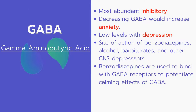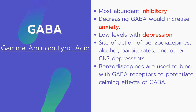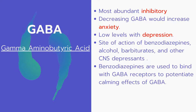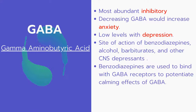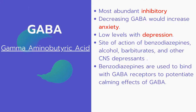The fifth neurotransmitter is GABA, gamma-aminobutyric acid — the most abundant inhibitory neurotransmitter. Decreasing GABA increases anxiety, and low levels of GABA are seen in depression. GABA is the site of action for benzodiazepines, alcohol, barbiturates, and other CNS depressants. Benzodiazepines like Ativan bind to GABA receptors to potentiate GABA's calming effects and reduce anxiety.